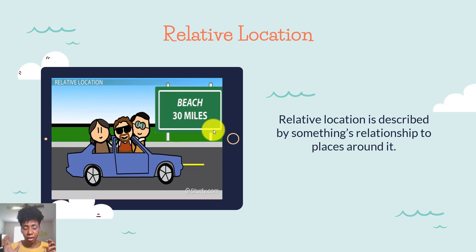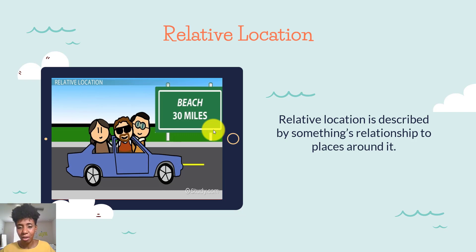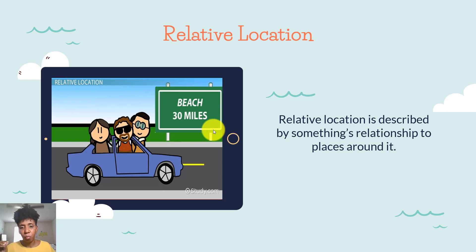Then we have relative location. Relative location is basically location based on what's around you or what's surrounding that place. So we may say the beach is 30 miles west of the city. We can say that Osceola High School is six miles away from Gateway High School because we're using relative location — a relative idea based on the things that surround our location, using different modes of distance measurement to describe where certain things are located.